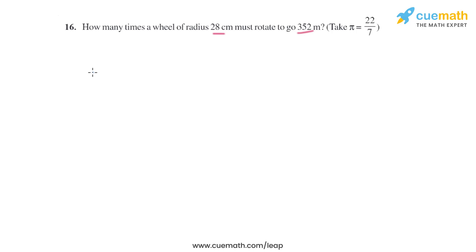Let's convert the radius into meters. 28 centimeters is the same as 28 divided by 100, which equals 0.28 meters. So that is the radius in meters.